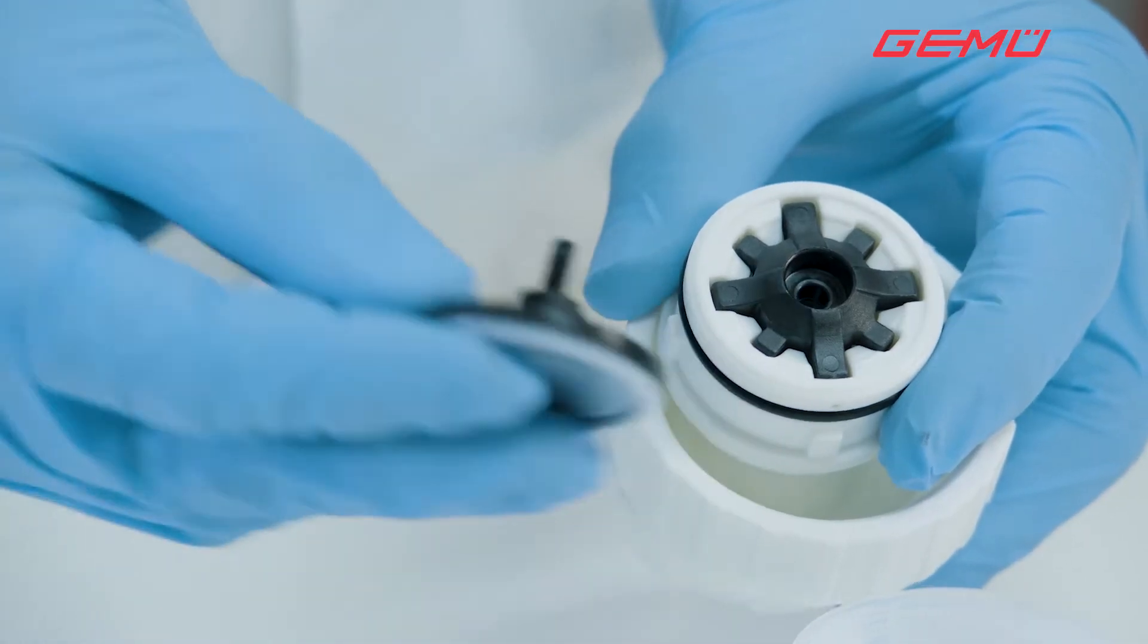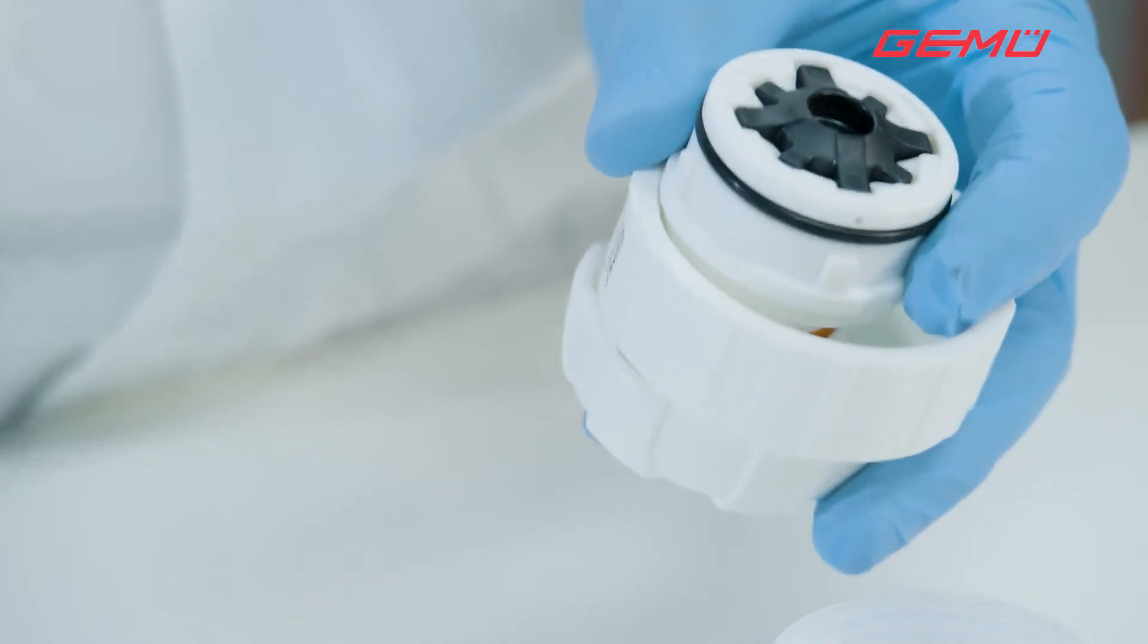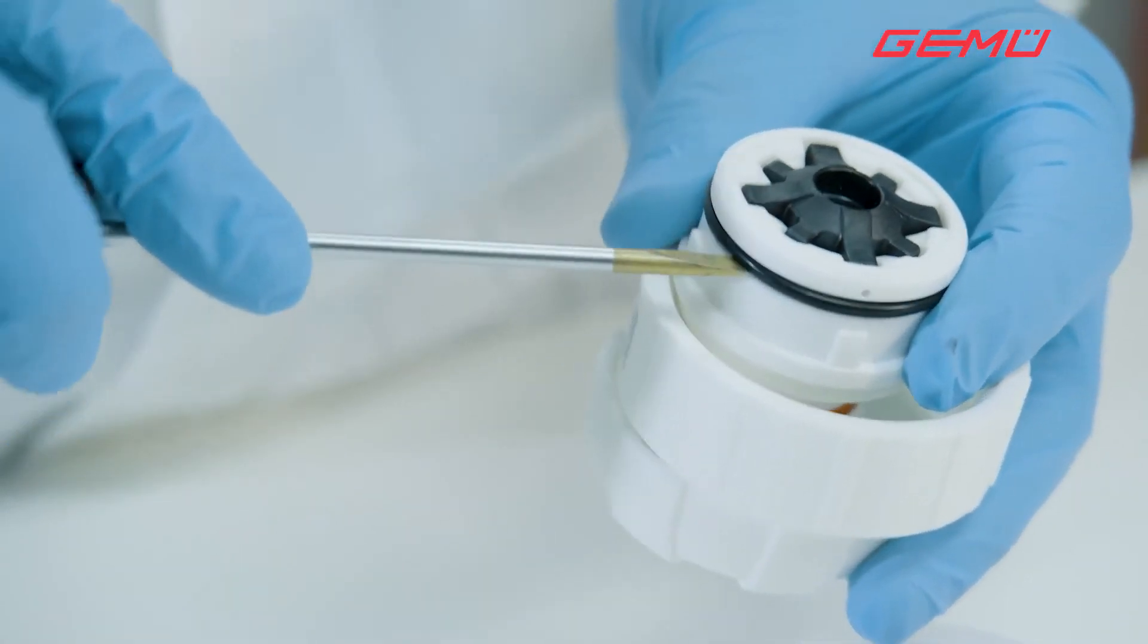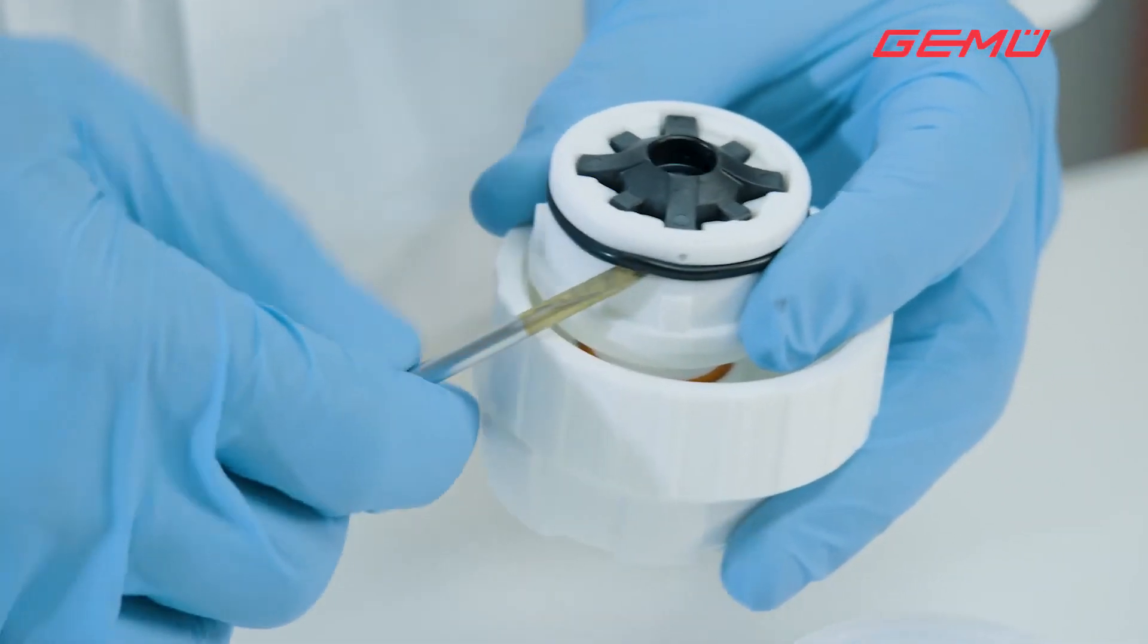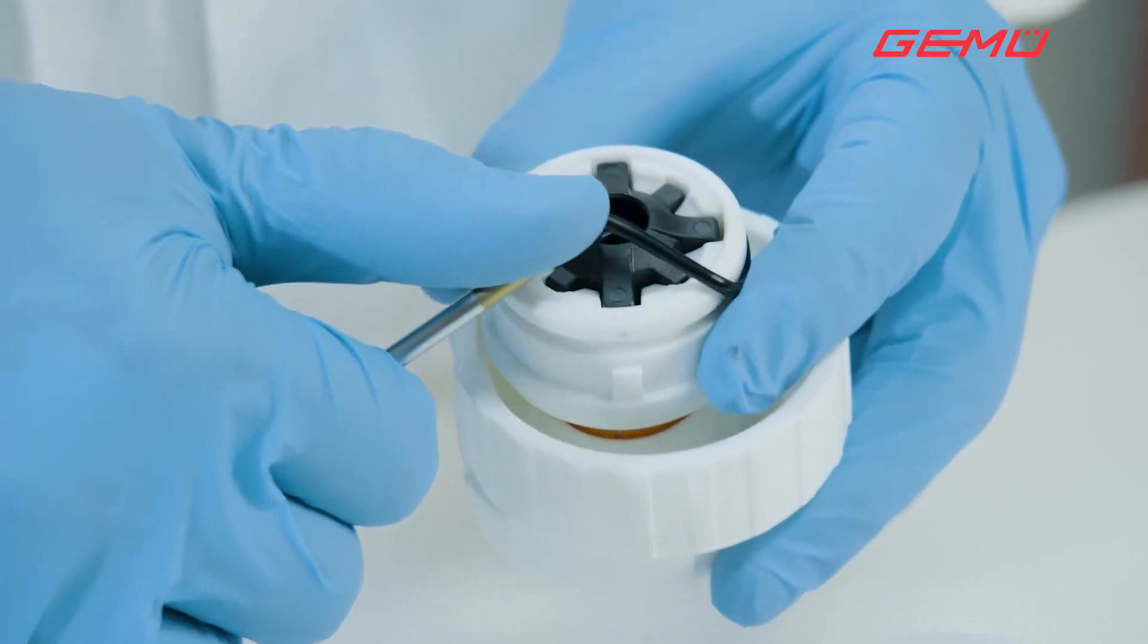Then remove the old o-ring from the actuator. When removing the old o-ring using an appropriate tool, ensure that the guide groove is not damaged.